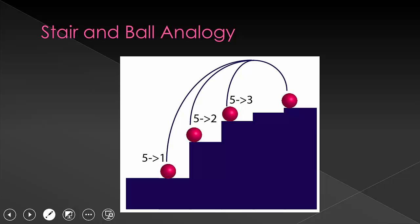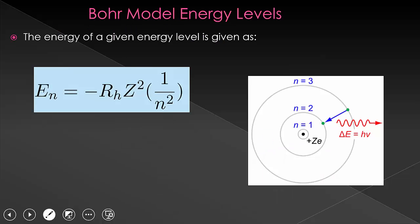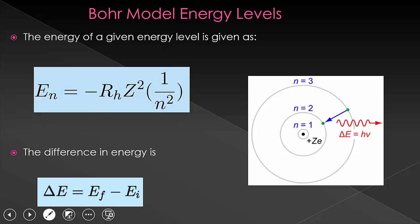From here, we were able to, or by we, I mean Rydberg, was able to determine the energy levels of each transition. So what Rydberg was able to figure out is we can take the difference in energy, being delta E equals E final minus E initial, and using the energies of transitions, he was able to derive this formula.